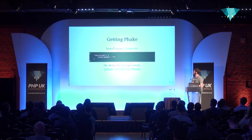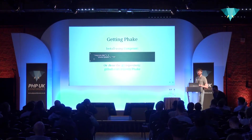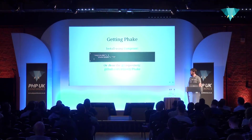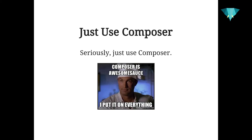Installing Fake is relatively simple. How many people are familiar with Composer and have used it? So you have the option to install it with Composer. You can also clone the Git repository directly. To my knowledge, there aren't any other installation options offered. I highly recommend just using Composer — it makes things a lot easier.